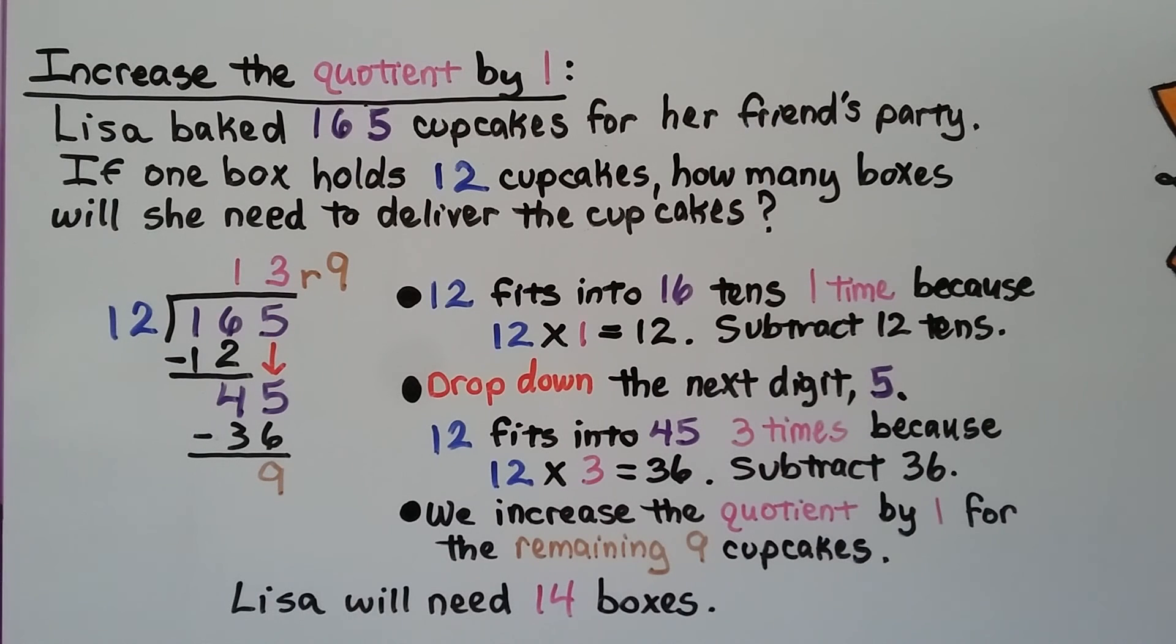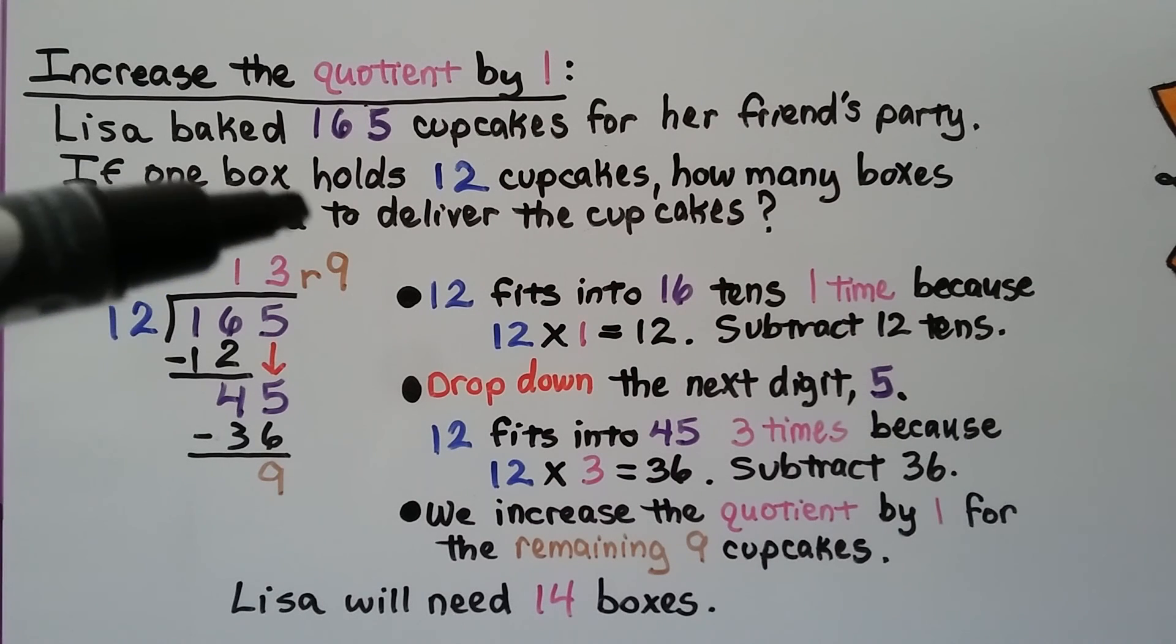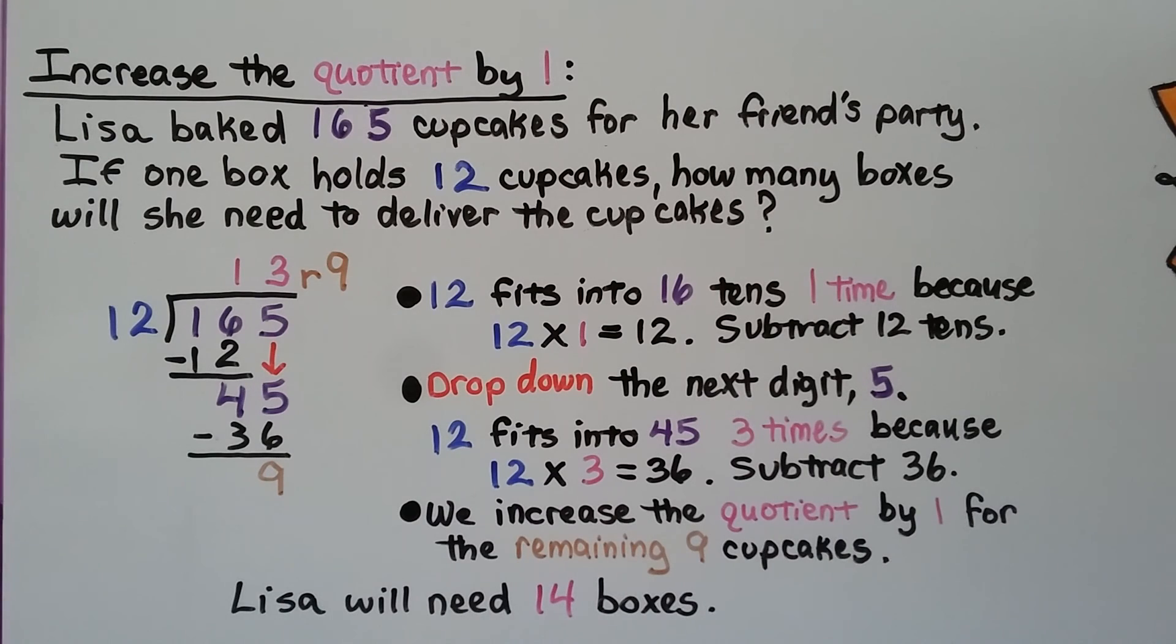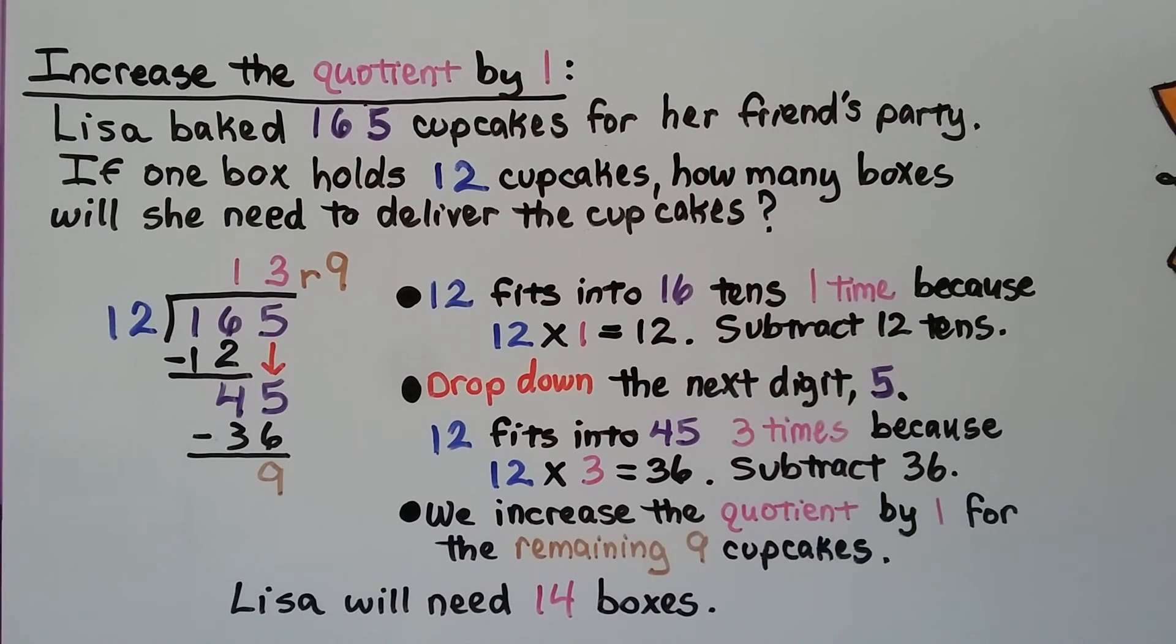We increase the quotient by 1 for the remaining 9 cupcakes. She needs 13 boxes, but now she has 9 cupcakes left over. She'll need 14 boxes. So that last box is going to have 9 cupcakes in it. So we increase the quotient by 1.